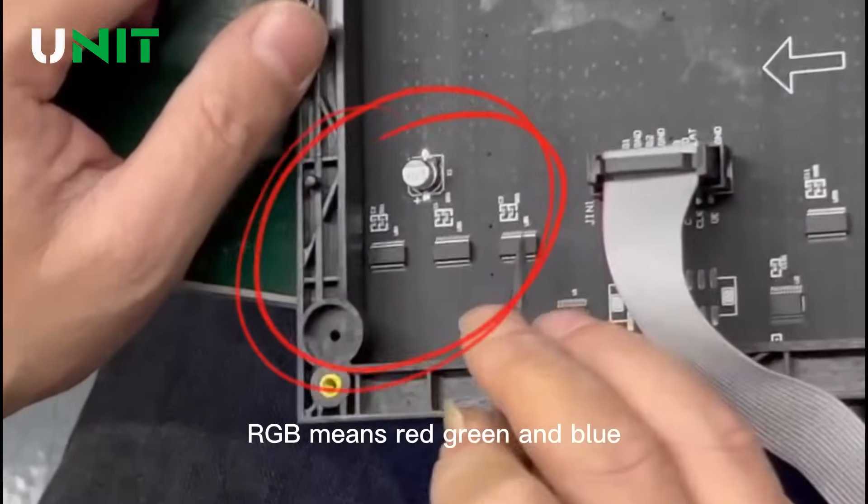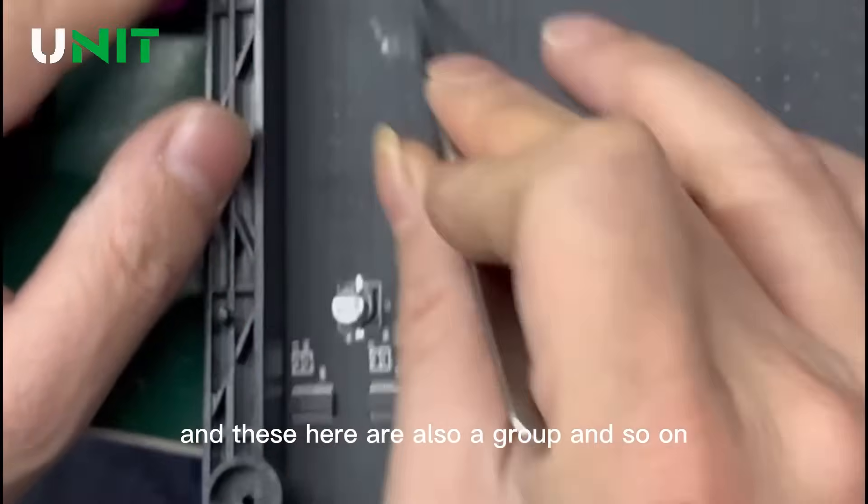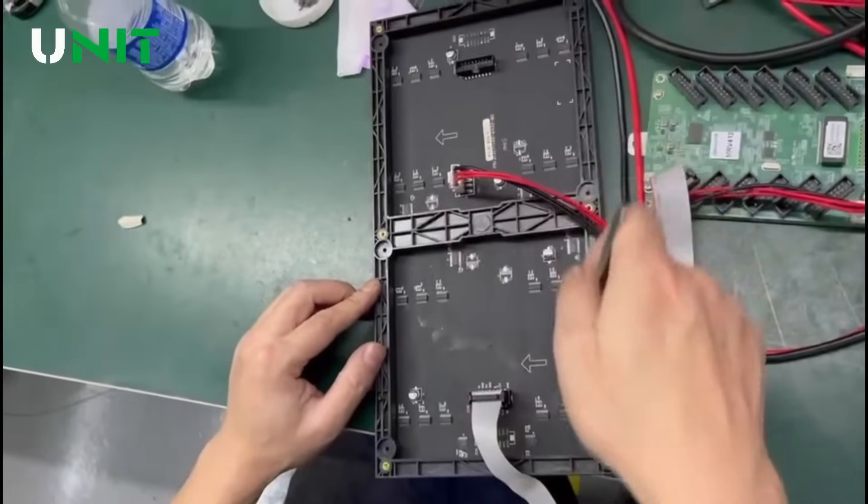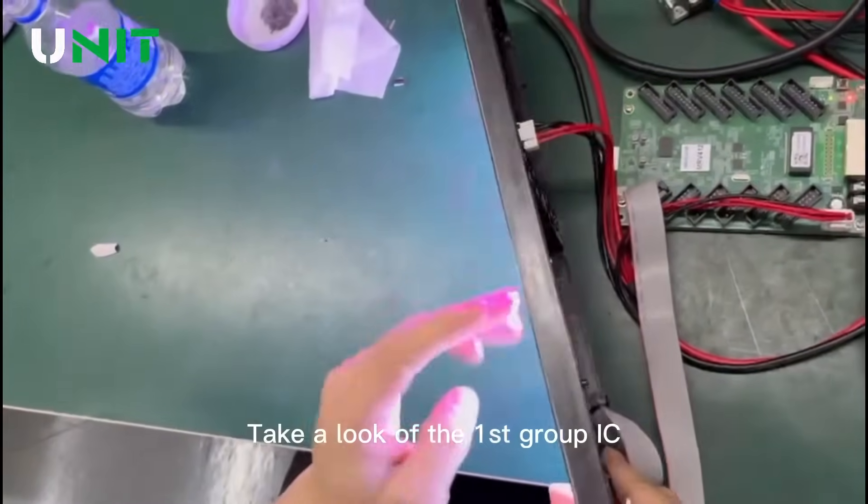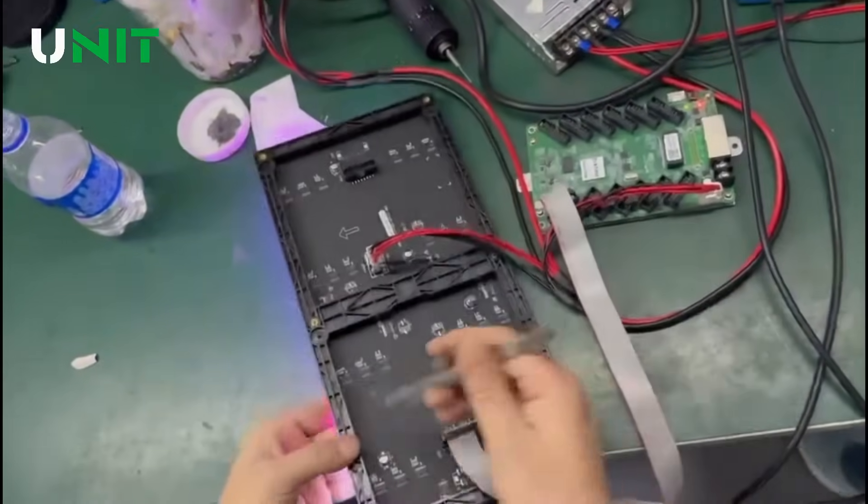RGB means red, green, and blue. These three ICs are a group, and these here are also a group, and so on. Take a look at the first group IC, which corresponds to the color of the front light.